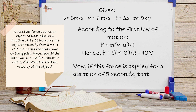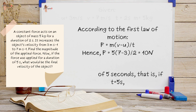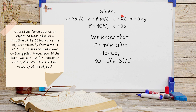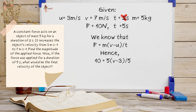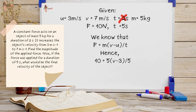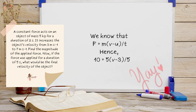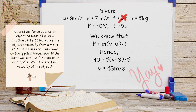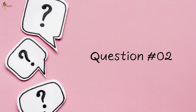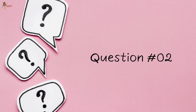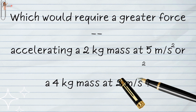If this force is applied for a duration of 5 seconds instead, the final velocity is found using F = m(v − u)/t: 10 = 5 × (v − 3)/5, giving a final velocity of 13 meters per second.